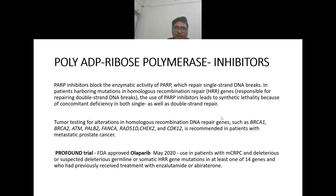PARP inhibitors (poly ADP-ribose polymerase inhibitors) block the enzymatic action of PARP which repairs single-strand DNA breaks in patients harboring mutations in homologous recombination repair genes responsible for repairing double-strand DNA breaks. The use of PARP inhibitors leads to synthetic lethality due to concomitant deficiency in both single and double-strand repair. Tumor testing for alterations in homologous recombination DNA repair genes such as BRCA1, BRCA2, ATM, PALB2, FANCA, RAD51, CHEK2, and CDK12 is recommended in patients with metastatic prostate cancer.